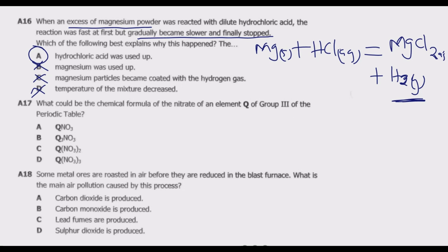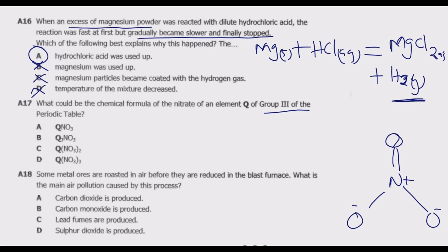Let us look at question A17. What could be the chemical formula of the nitrate of an element Q of Group 3 of the periodic table? The structure of nitrate has one nitrogen with a double-bond oxygen, and two single-bond oxygens each with a negative charge. The positive and one negative cancel, leaving one overall negative charge, meaning nitrate has a valence of 1.